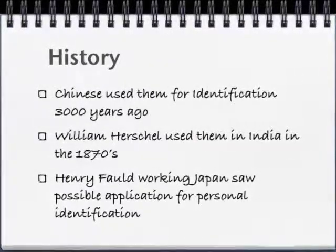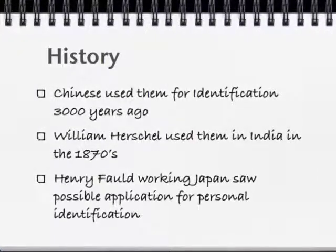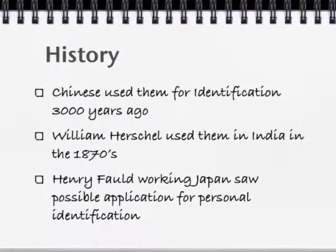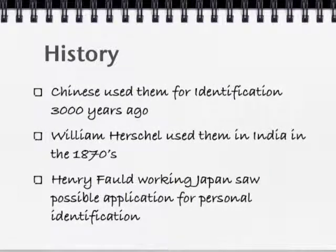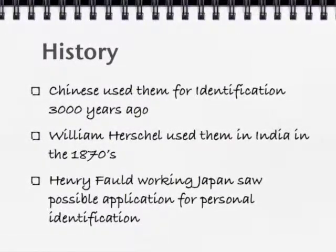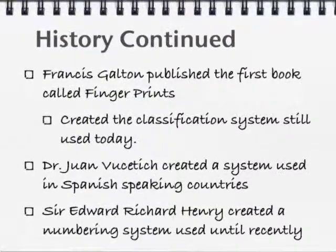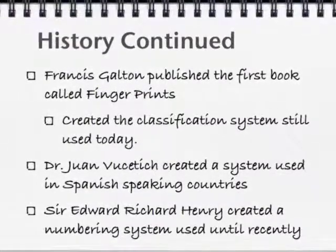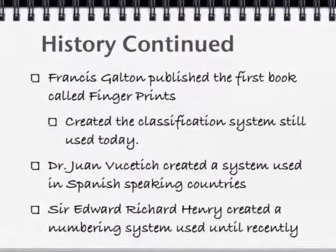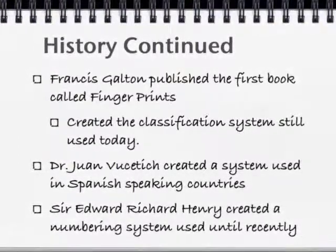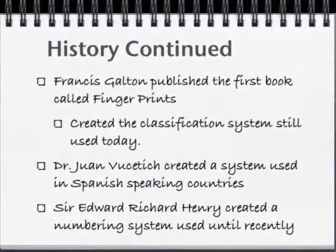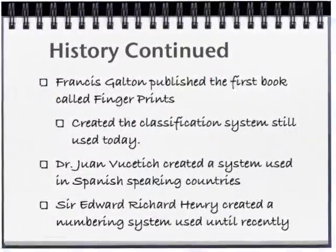Historically, the Chinese used them for identification 3,000 years ago. William Herschel used them in India in the 1870s and Henry Fao used them in Japan for personal identification purposes. Francis Galton published the first book on fingerprints called Fingerprints and it's still in use today. Dr. Juan Vucevic created a system used in Spanish-speaking countries and Sir Richard Henry created a system that was used until recently.